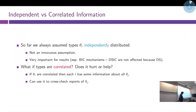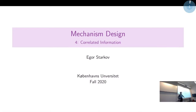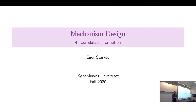Last time we were talking about mechanisms with correlated information. We argued that if you are looking at dominant strategy implementation, correlation in agents' information does not change your approach at all. Because if you are doing dominant strategy implementation, you do not care about the distributions of types — your IC conditions are so strong that they basically shut down any channels through which you can exploit correlation between agents' information.